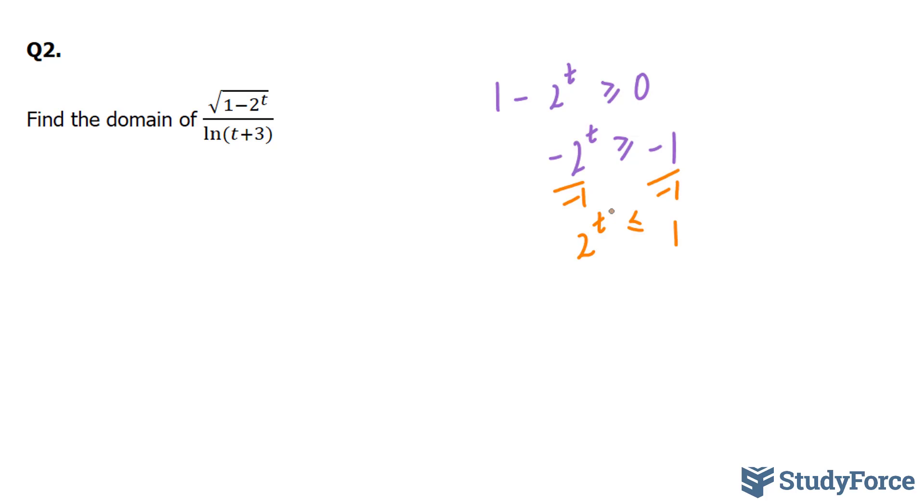So now the inequality is 2^t must be less than or equal to 1. Now to solve for this t, you'll need to ln both sides. And that's the only way to bring the t to a position where it can be isolated. So if I ln both sides, I end up with ln(2^t).